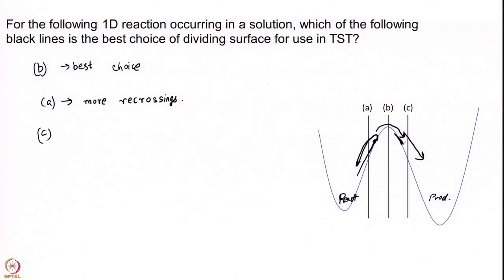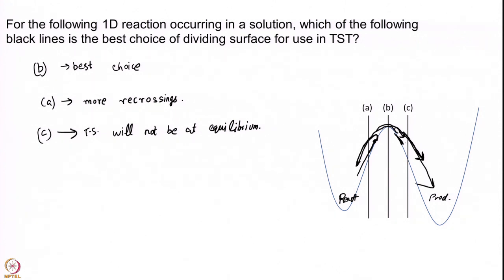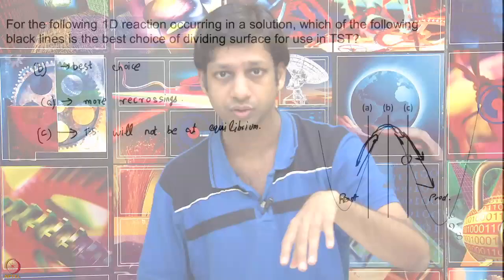What about C? At C the energy surface is already downhill, so trajectories are simply falling toward products. But C is not better because the other key assumption — that the transition state is at equilibrium with the reactants — breaks down there. Trajectories are coming up and crashing forward into products, so there is no reason to expect a good Boltzmann distribution at C. The velocities are much faster and the equilibrium assumption does not hold well. So B is the optimal point where recrossings are minimal and the equilibrium assumption holds best.